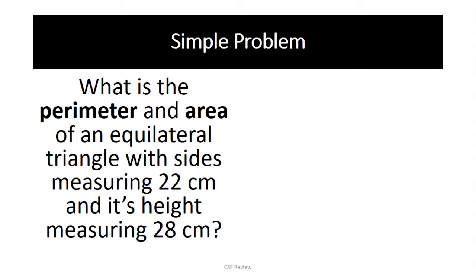Alright, let's see if you got it right. What's the perimeter and area of an equilateral triangle? Again, equilateral triangle, the sides are equal. The measurement of sides is 22 all. So this is 22, 22, 22. The height is 28 centimeters. To get the perimeter, multiply 22 by 3 or add the three sides. So we have 66 centimeters.